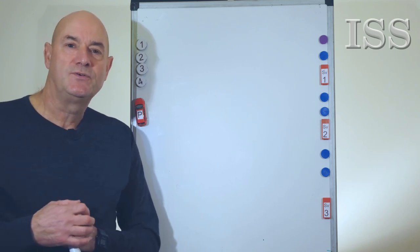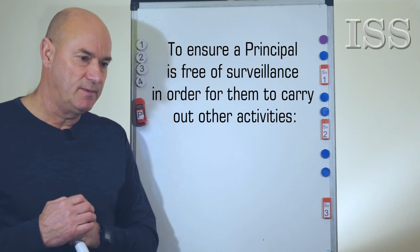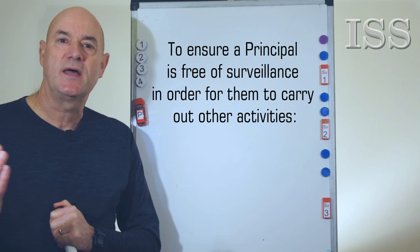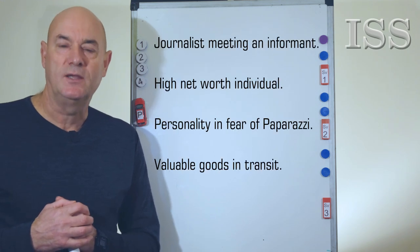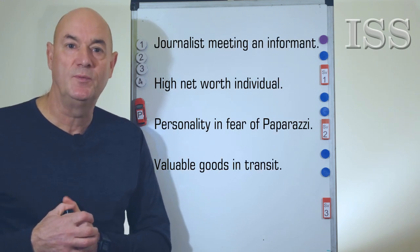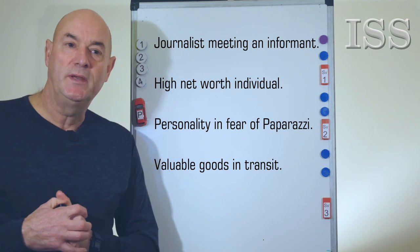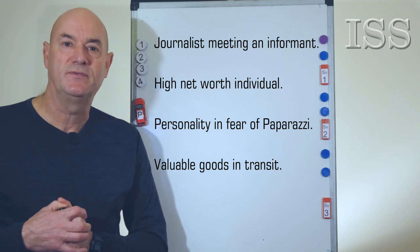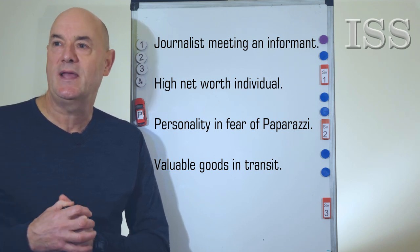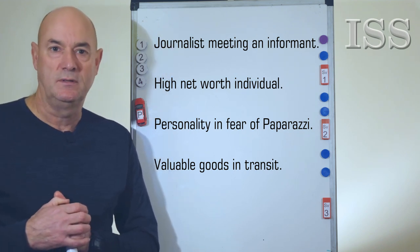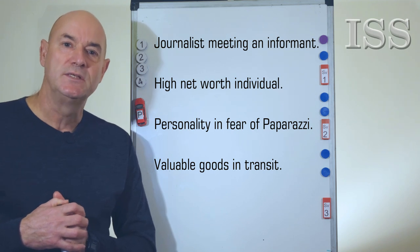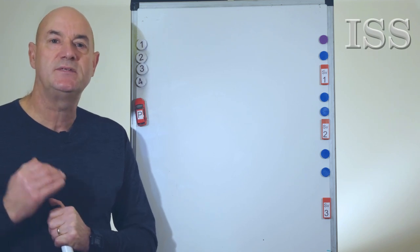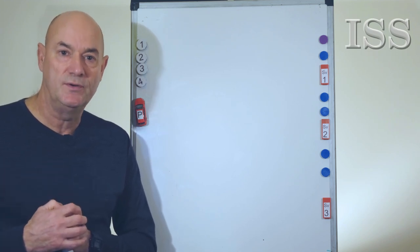Why are we going to do counter surveillance in the first place? Well, it might be because you're watching the back of, or protecting, somebody that's going to have a meeting somewhere. It could be a journalist who's meeting an informant, it could be a high-net-worth individual going from A to B who is targeted for surveillance, or it may be somebody carrying high-value goods that's open to attack or robbery. There are various reasons why we're going to put somebody through a counter surveillance route to identify whether they're being followed or not.